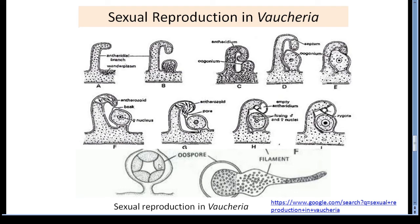Now the germination of the oospore: the oospore is liberated after the decay of the vegetative thallus. The diploid nucleus of the oospore undergoes meiotic division and then mitotic division to produce many haploid nuclei. A small outgrowth comes out through a pore of the oospore wall and produces a few branches. One branch develops into a rhizoidal system and the other forms the vegetative part. The new thallus is a haploid gametophyte.